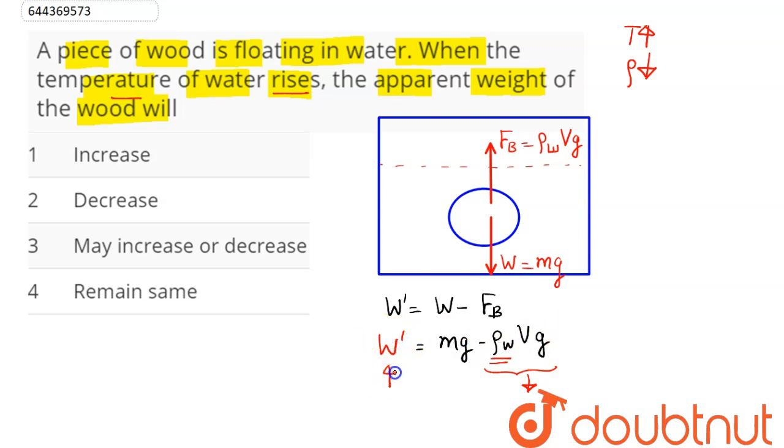the apparent weight value increases. So apparent weight increases - that is option number one, 'Increase,' is the correct answer. Hence, when the temperature of water rises, the apparent weight of wood will increase. So option number one is the correct answer.